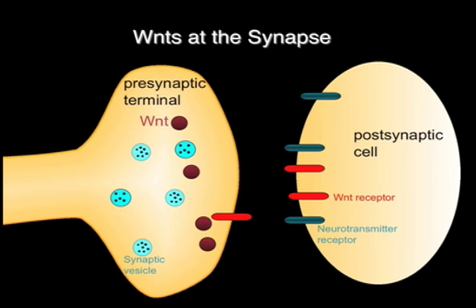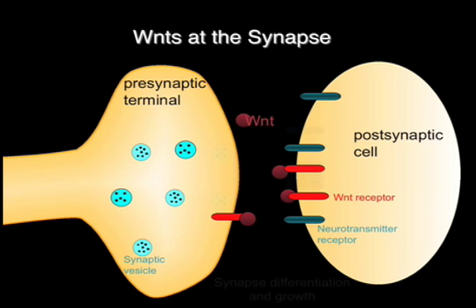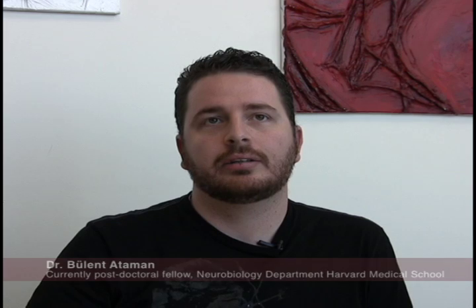At neuromuscular synapses of fruit flies, a Wnt named Wingless is secreted in an activity-dependent manner from the presynaptic terminal and interacts with presynaptic and postsynaptic receptors, which leads to synapse differentiation and growth. The finding that secreted Wnts also function in the nervous system to regulate synapse differentiation and synaptic plasticity suggests that a similar mechanism can be utilized in multiple contexts — to specify cellular properties such as cell fate determination in the embryo, or synapse regulation in the adult brain.